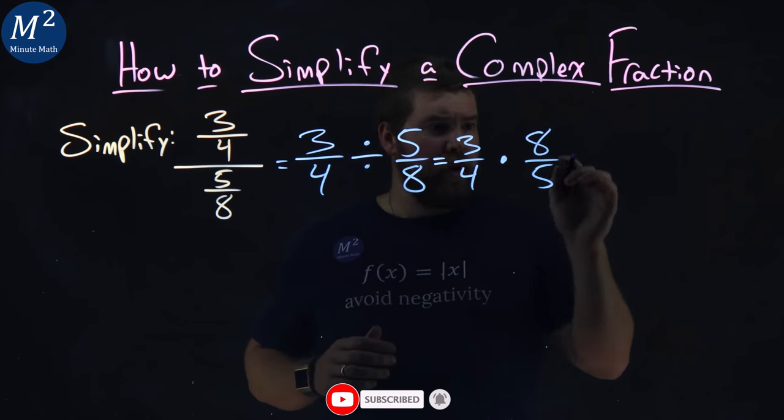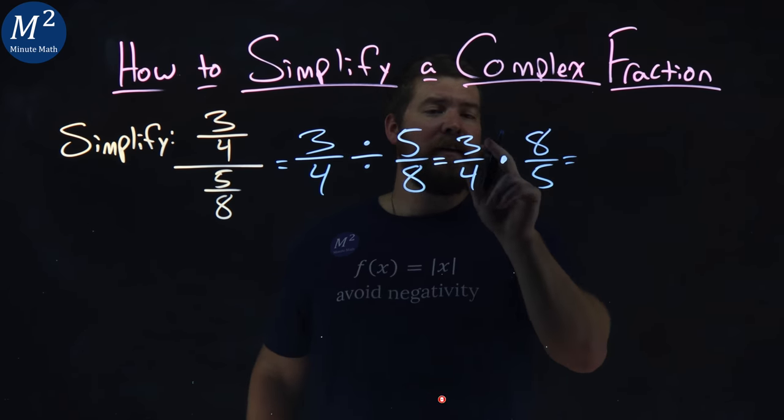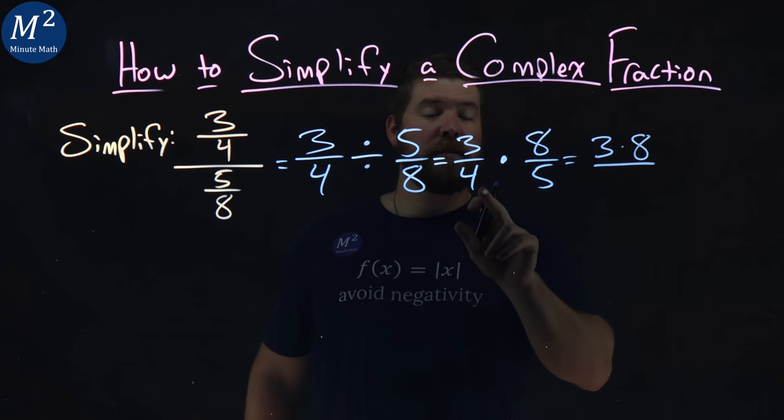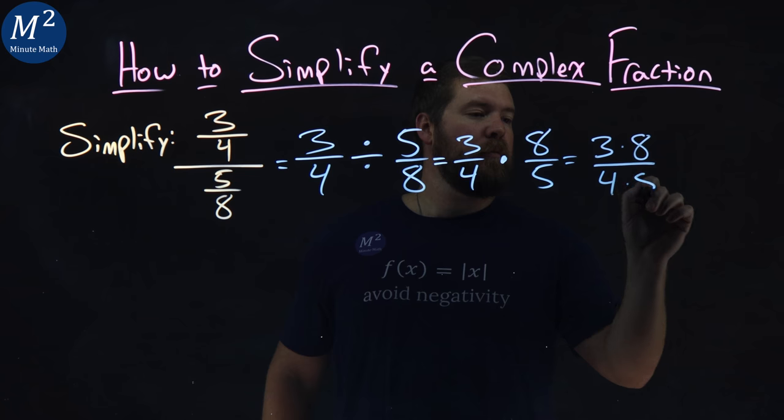Multiplying complex or improper fractions, we multiply across the numerator, three times eight here, over denominator four times five.